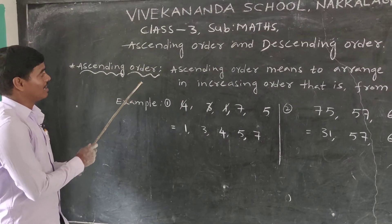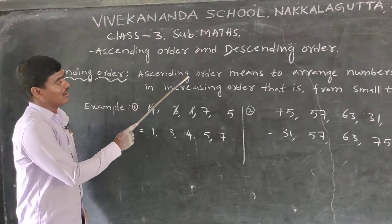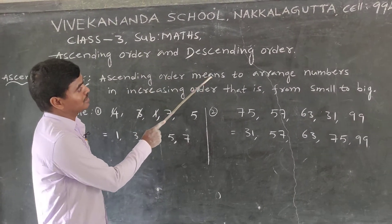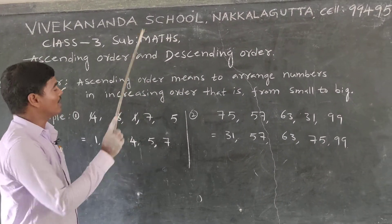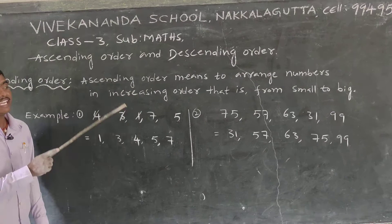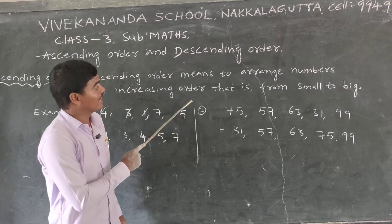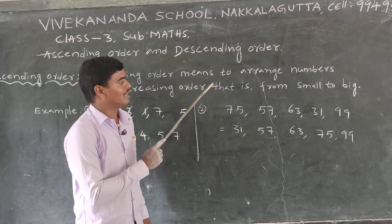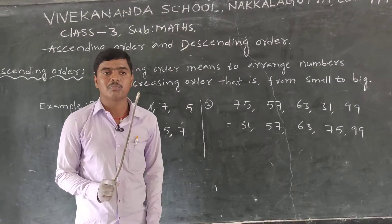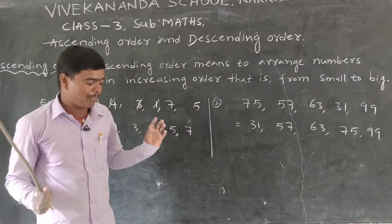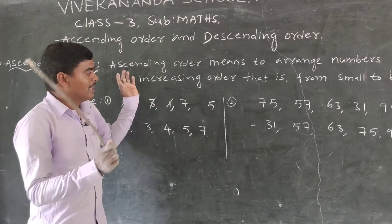Let's repeat. What is ascending order? Ascending order means to arrange numbers in increasing order, that is from small to big.